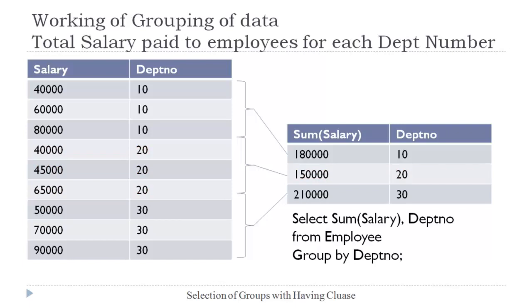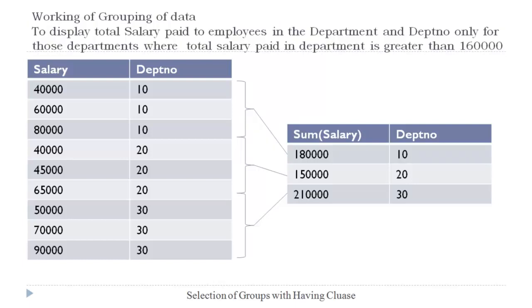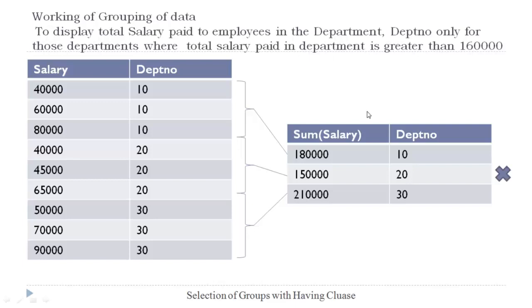The query to perform this operation is: SELECT SUM(salary), department_number FROM employee GROUP BY department_number. Now let us extend this operation to display total salary paid to employees and the department number only for those departments where the total salary paid is greater than 1,60,000. In this case, after making the groups we have to select only those groups of department number where total salary is more than 1,60,000.